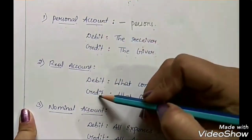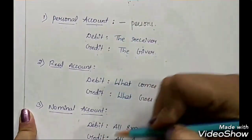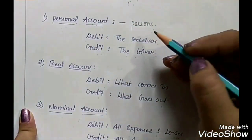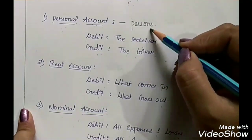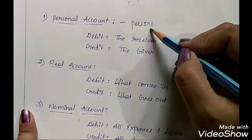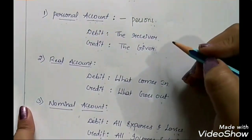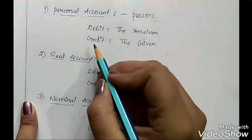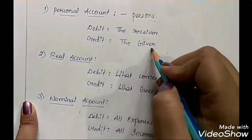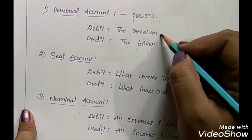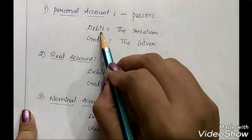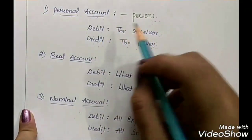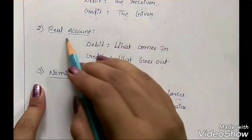There are three types of accounts and every account has its own rules. First is personal account, which deals with persons. Not only persons, but also institutions and companies come under personal account because they are treated as artificial persons with separate existence. The rule of personal account says: debit the receiver and credit the giver.